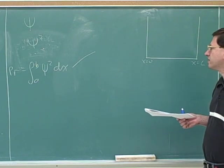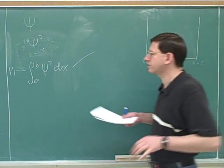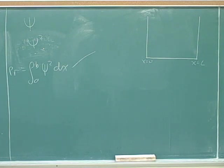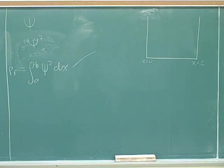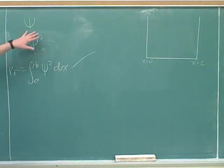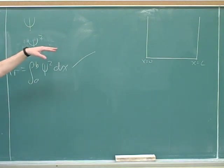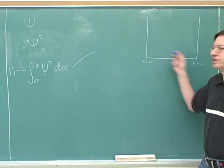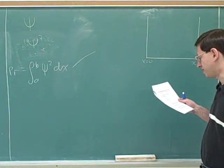Here we can bring in another idea from quantum physics. In classical physics, particles can have any energy along a continuum. However, in quantum physics only certain energy levels are possible. The energy levels correspond to n equals 1, 2, 3, 4 — but you couldn't have n equals 1.5 or 2.5. This is basically because we can think of psi as a standing wave inside the box, and only certain standing waves are allowed — only the waves that have a node at both ends. So only certain values of n are allowed.